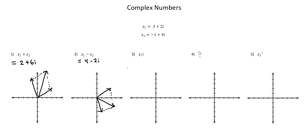Problem three: Z1 times i. The result of this multiplication is negative 2 plus 3i. We'll go to the Argand diagram starting with Z1, 3 plus 2i, creating a position vector. Now let's do the same for the result and identify the relationship between the two vectors. Negative 2 plus 3i — putting in a position vector. What I observe is that the relationship from the starting vector to the resultant vector resulting from multiplication by i is a rotation of 90 degrees anticlockwise. Thus, the geometric representation of the multiplication of a complex number by i is a rotation 90 degrees anticlockwise.